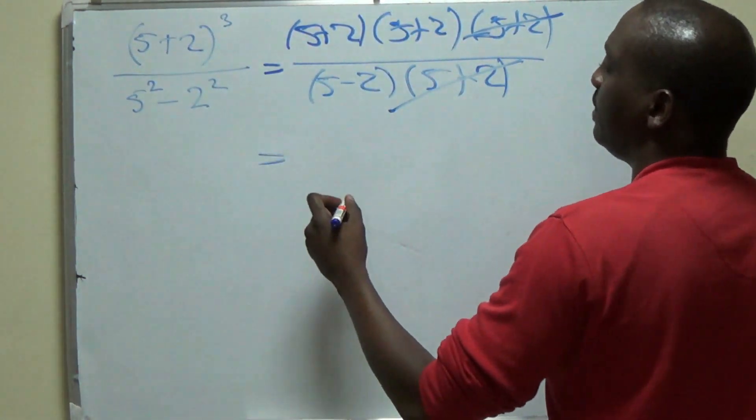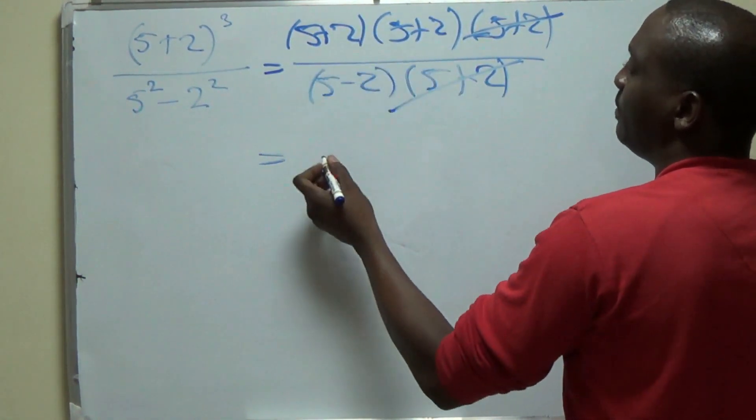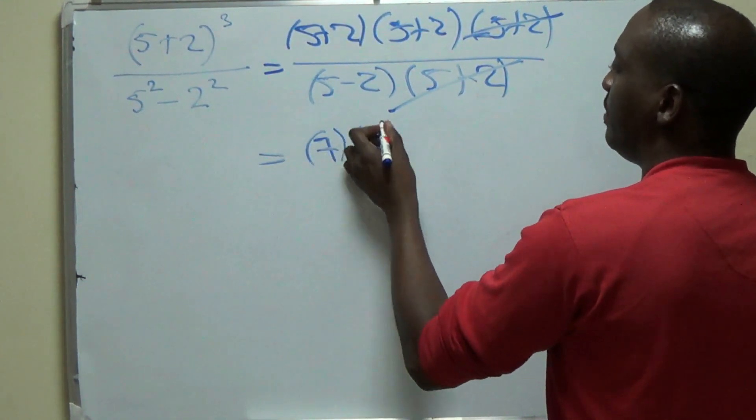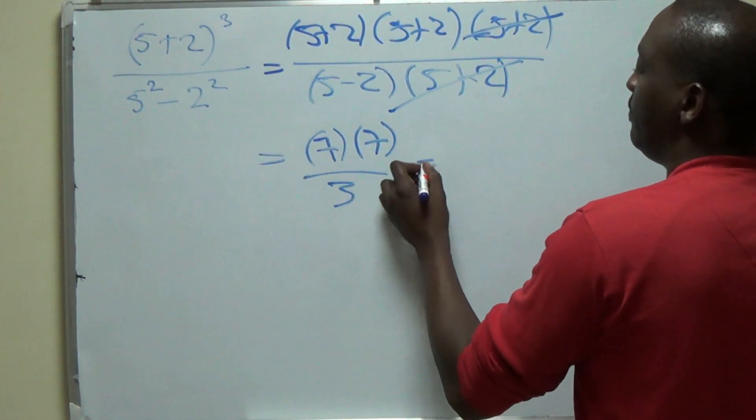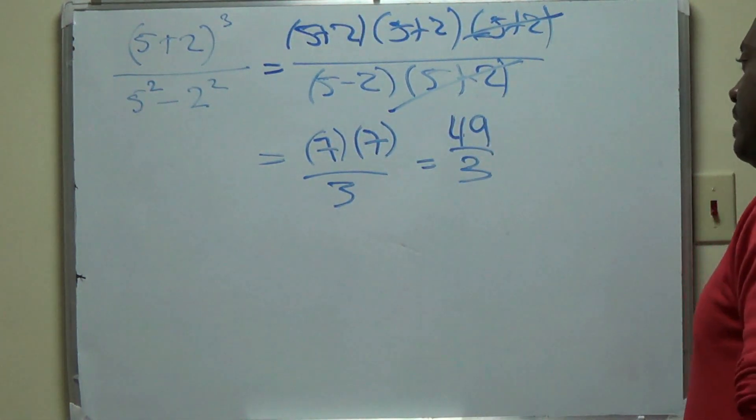Which would then be what? 5 plus 2 into 5 plus 2 is 7 by 7, which would be 7 by 7 over 3, which would give you 49 over 3 as the answer.